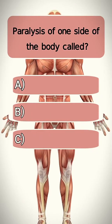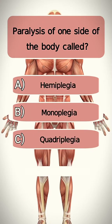Paralysis of one side of the body is called? Answer A. Hemiplegia.